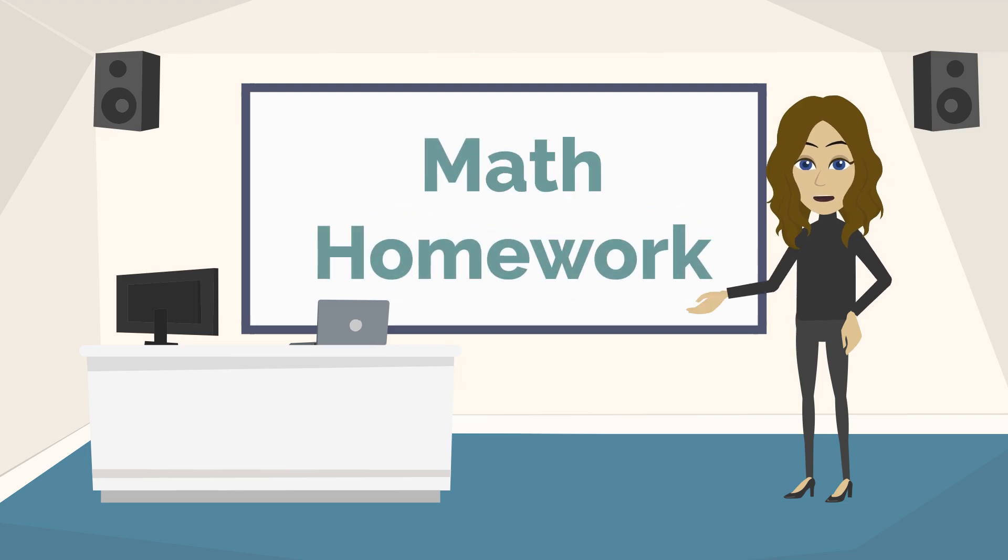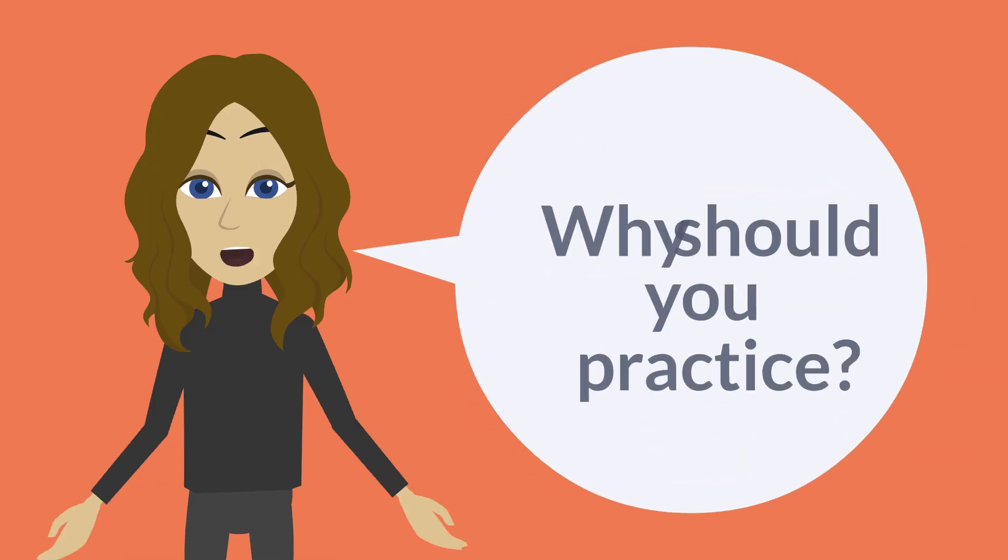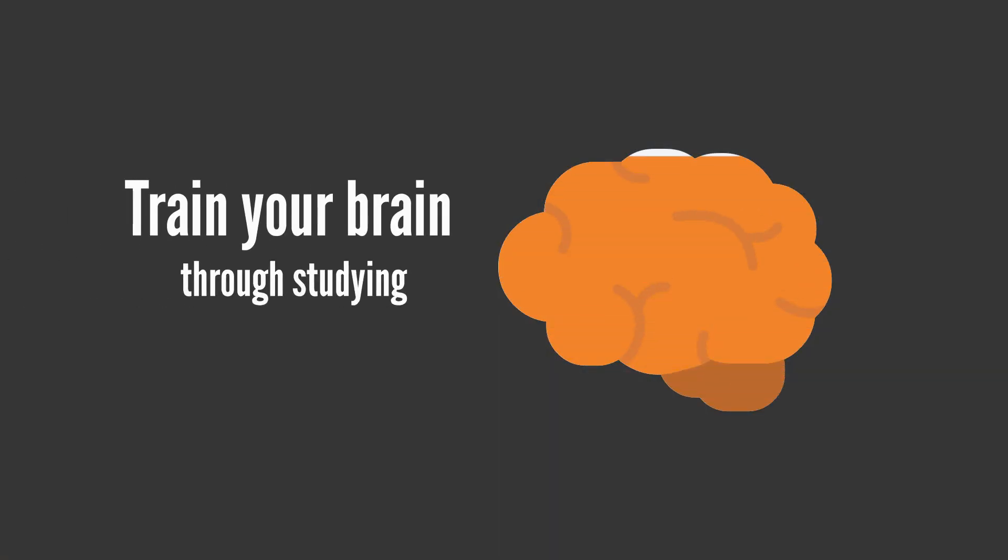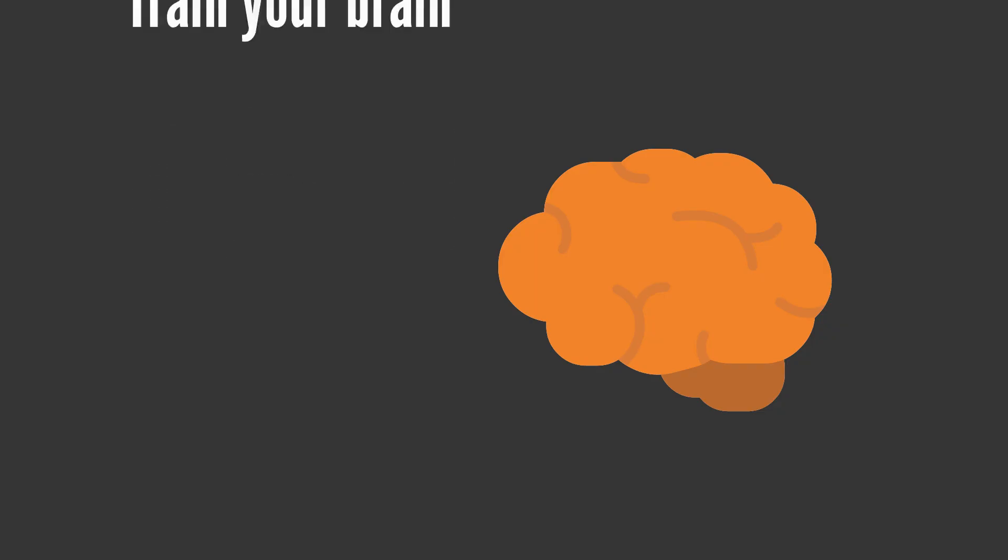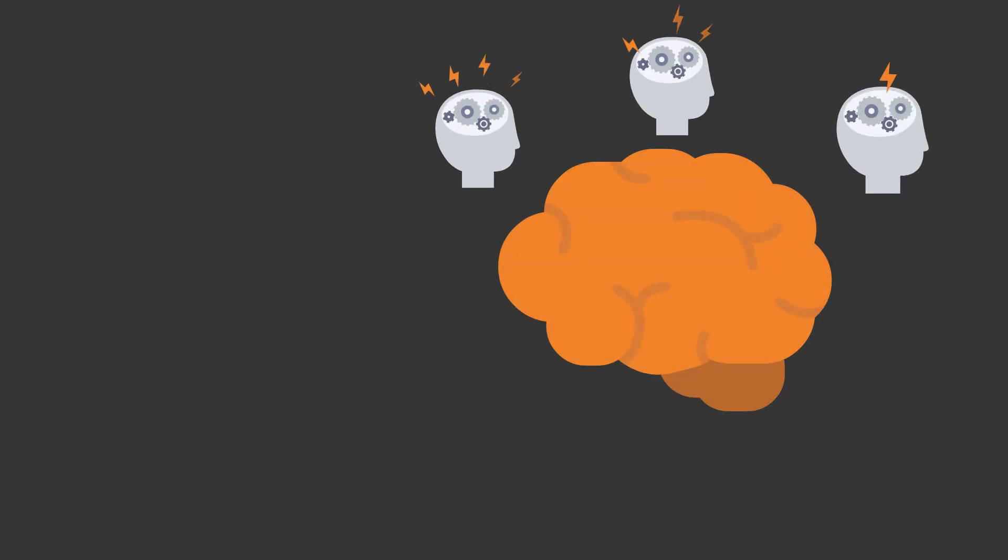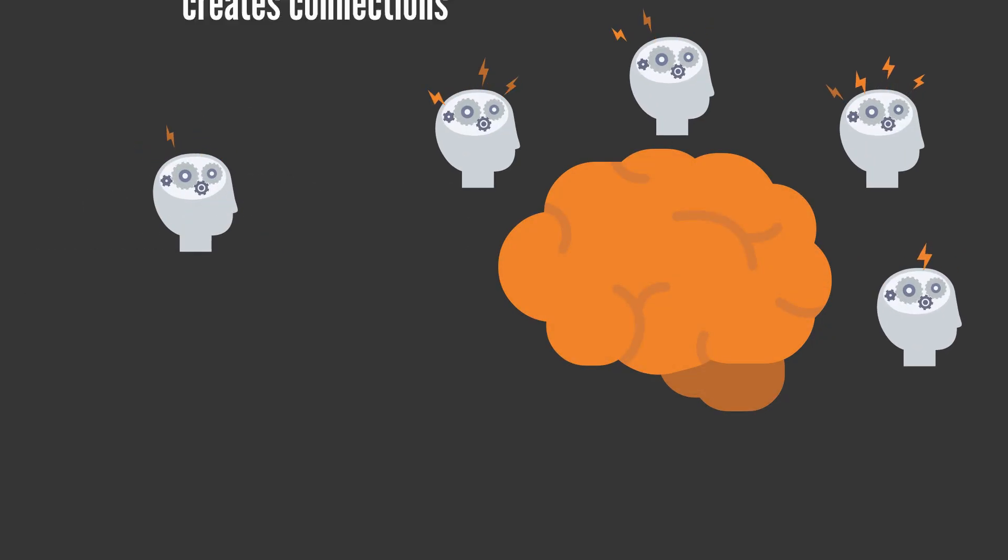In this video we will cover how to effectively practice to learn. First, the why: why should you practice? Think of your brain as a muscle. When you train it through studying, it gets better at what you were training it to do. Brain strength comes from connections that your brain builds when you study and practice.